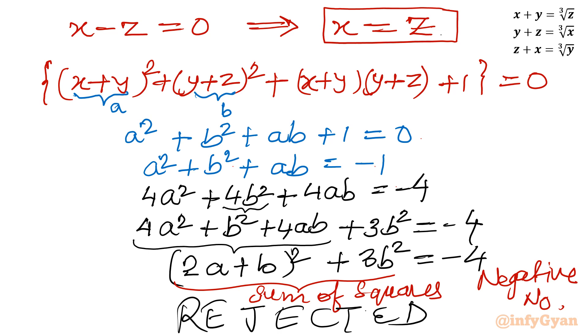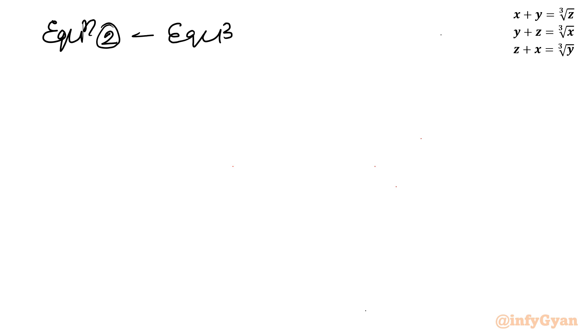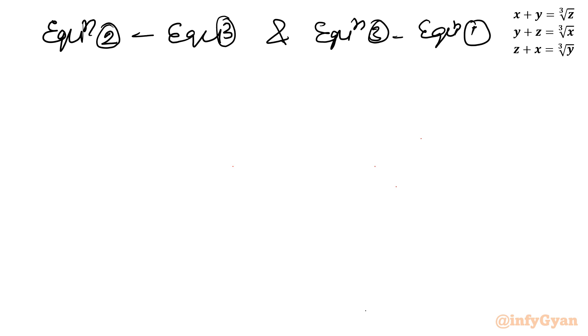The accepted solution comes from x = z. This result came after performing equation 1 minus equation 2. If I perform two more operations — equation 2 minus equation 3, and equation 3 minus equation 1 — by the same reasoning we will get y = z and x = y. So the conclusion is x = y = z.